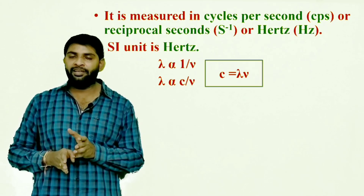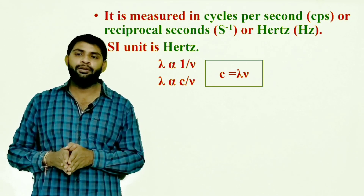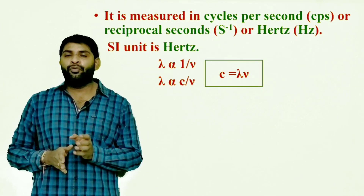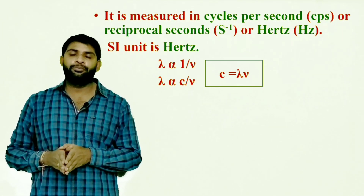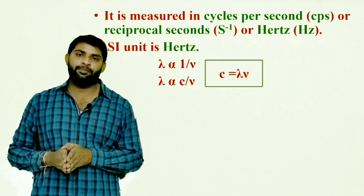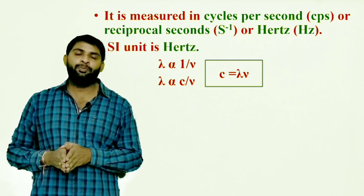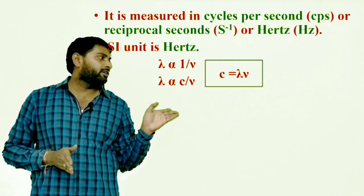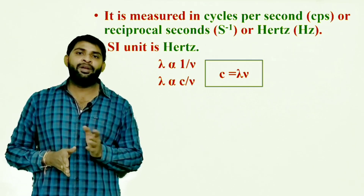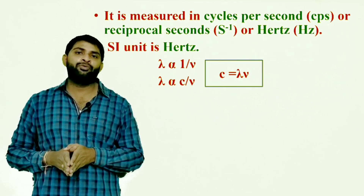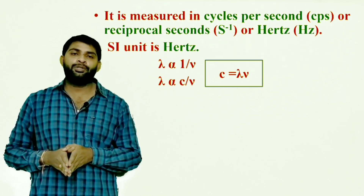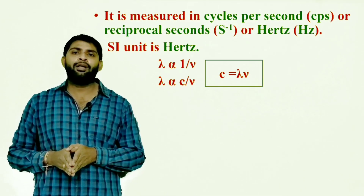There is a relation between wavelength (λ) and frequency (ν): lambda is inversely proportional to frequency. So lambda is proportional to C divided by nu, which gives us the formula C = λν.